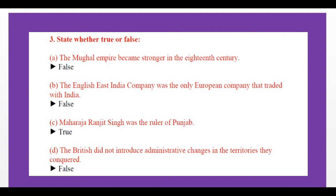Maharaja Ranjit Singh was the ruler of Punjab — that is true. The British did not introduce administrative changes in the territories they conquered — that is false, because the British introduced the system of Faujidari Adalat, Diwani Adalat, and introduced several changes in civil administration, criminal administration, and even in the administration of the army.